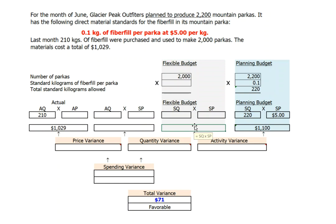What would we have budgeted to spend given that we actually produced 2,000 units? So we're going to take our 2,000 units, multiply it by one-tenth of a kilogram of fiberfill per parka, which means we would have expected to use 200 kilograms of fiberfill. 200 kilograms at a $5 per kilogram price gives us a standard allowed of $1,000. When we compare this to our actual expenditures of $1,029, we see we have a $29 spending variance, and that spending variance is unfavorable, since we spent more than we should have spent to produce our actual level of production of 2,000 parkas.